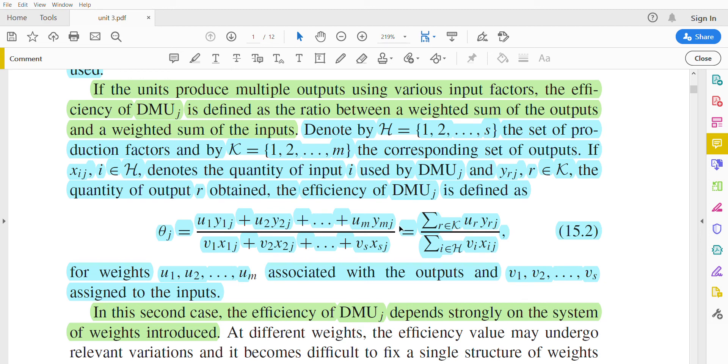The production factors are associated with weights for the outputs denoted by u, and the associated weights for the inputs are denoted with v_k. In this second case, the efficiency of DMU depends strongly on the system of weights introduced.